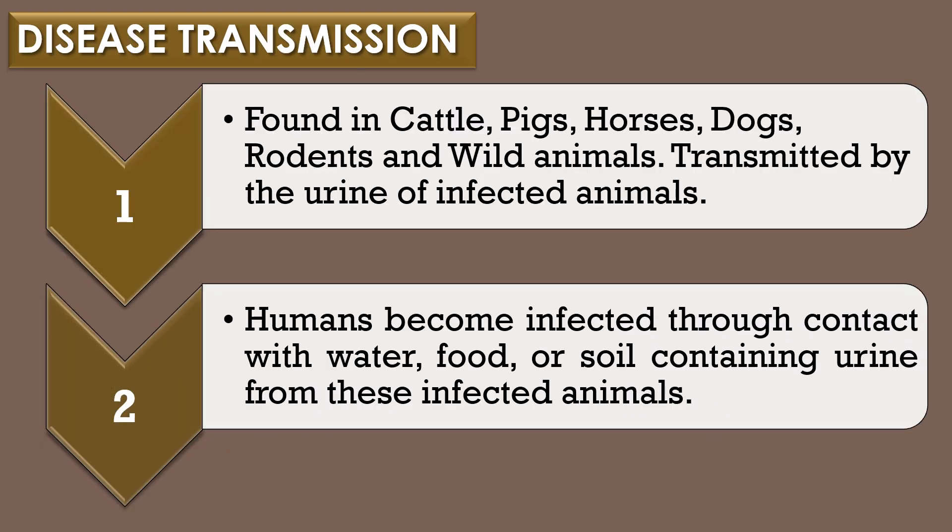Disease transmission: Leptospira introgons organisms have been found in cattle, pigs, horses, dogs, rodents, and wild animals. Leptospirosis is transmitted by the urine of infected animals, and humans become infected through contact with water, food, or soil contaminated with urine from these infected animals. This may happen by swallowing contaminated food or water, through contact with the skin, or through contact with mucosal surfaces such as the eyes or nose.